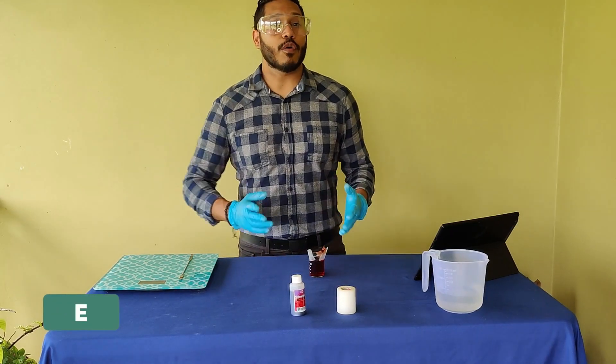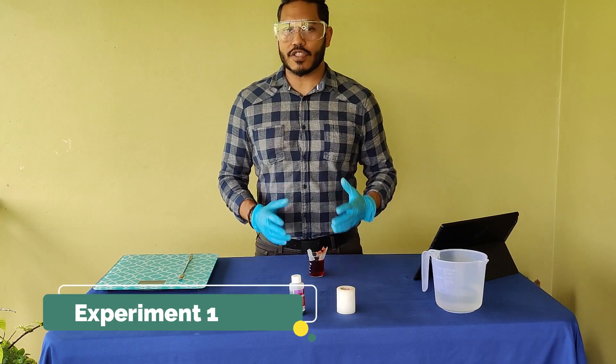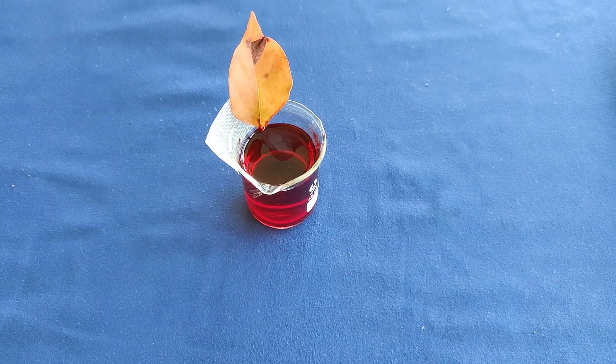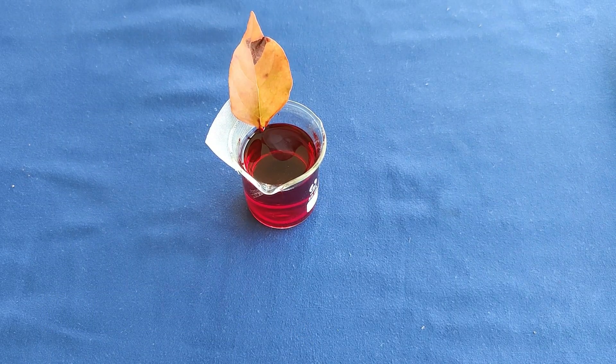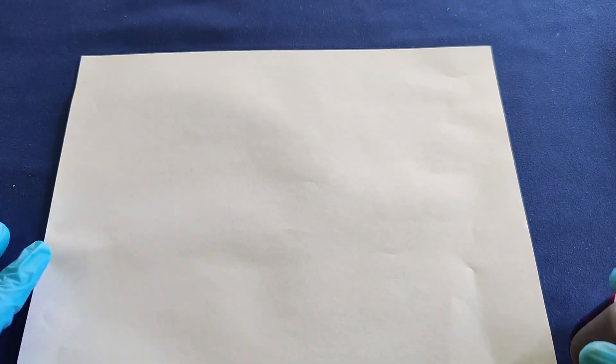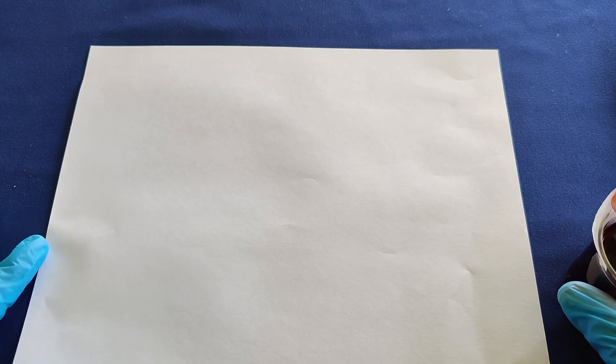Now it's time to look at the results of experiment number one. Before looking at the results, we first place a white background — the white background makes it easier for us to see color changes that would appear on the leaf.